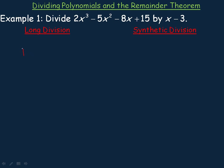So let's say we wanted to divide 4 into 49. We write it like this — the long division way. The first thing you do is divide 4 into 4: 4 goes into 4 once. Write that 1 here, multiply by 4, 1 times 4 is 4, put that here and subtract. 4 minus 4 is 0, then bring the 9 down. 4 goes into 9 twice, write that 2 up here. 2 times 4 is 8, subtract — 9 minus 8 is 1, and that's the remainder.